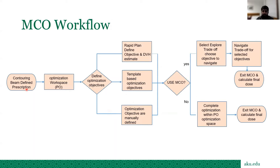This is the typical workflow: contouring, beam definition, and prescription — which is quite important. If you haven't done good medical physics contouring, you may not get a good plan in MCO either. In the optimization workspace, define optimization objectives using one of three options: RapidPlan if you have that license, department templates, or a manual approach. The recommendation is to first make your best plan then go to MCO, although MCO can also create the balance plan directly from the objectives, PTV, and priorities you set.